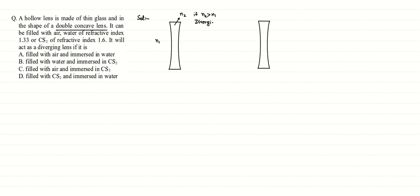The second condition is that if its refractive index is n2 and the outer refractive index is n1, and in this case if n2 is less than n1, then this lens behaves as a converging lens. So this is from the theory of lenses: a bi-concave or double concave lens, if the refractive index of the material making up the lens is more compared to the surrounding, it behaves as a diverging lens.